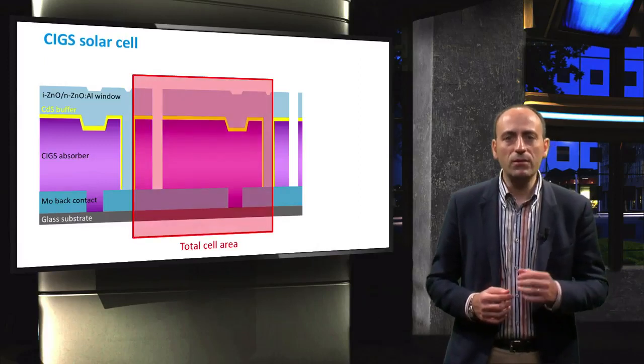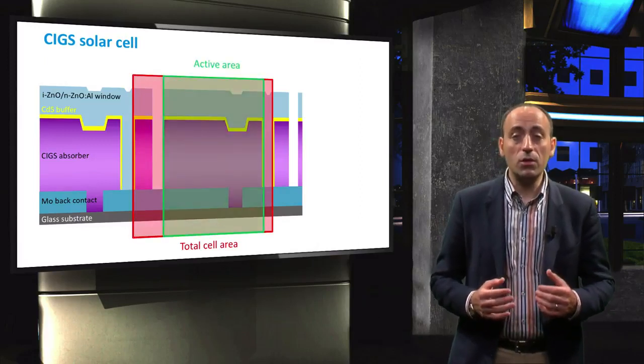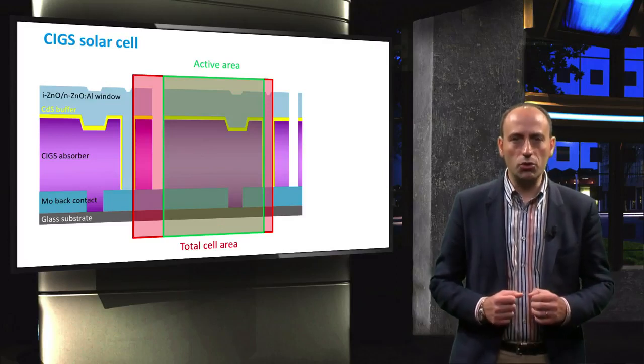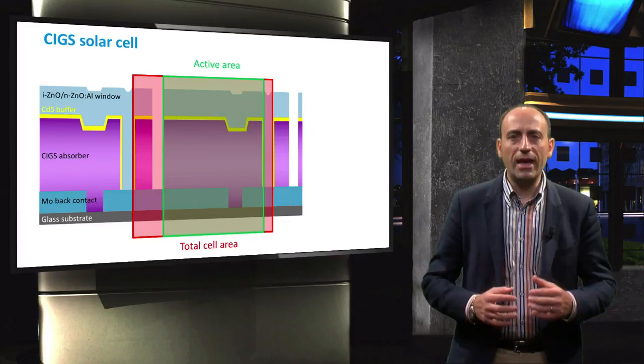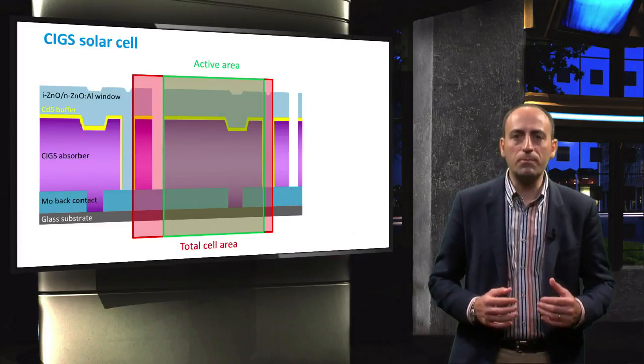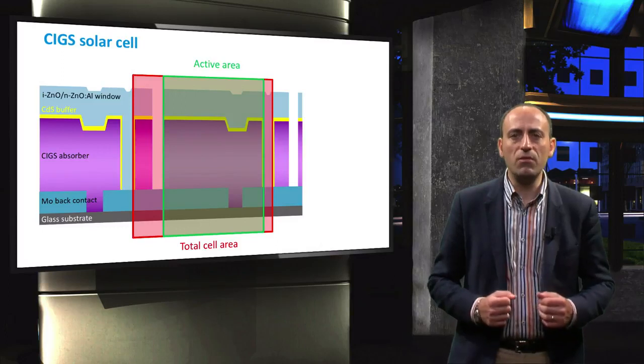The last laser scribe divides the single CIGS solar cell as shown in figure. Here we can recognize the total cell area and the active area, which does not include the region that does not contribute to the current generated by the module. Naturally, the active area with respect to the total cell area should be as large as possible in order to maximize PV module performance.